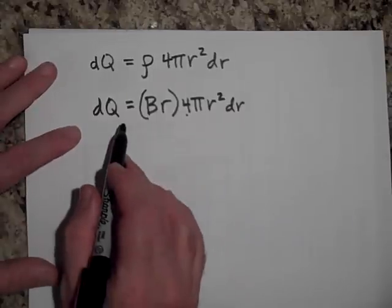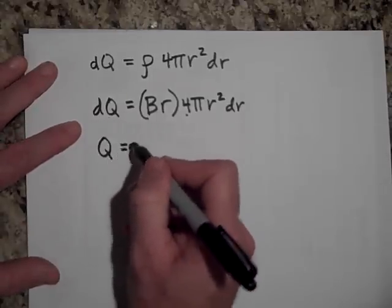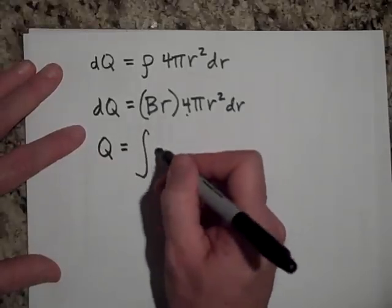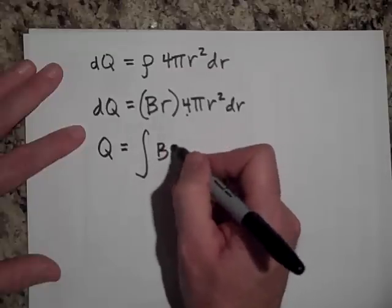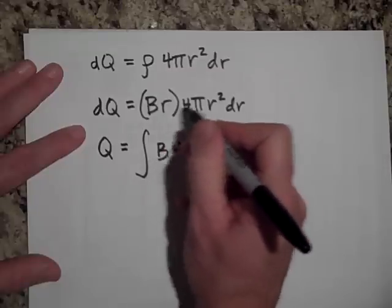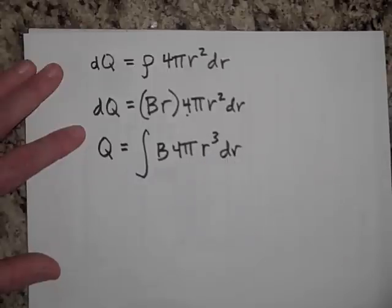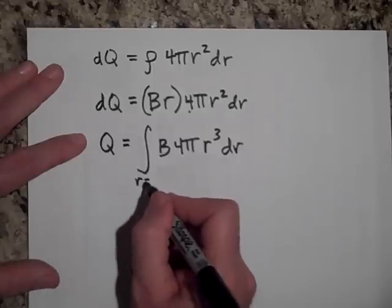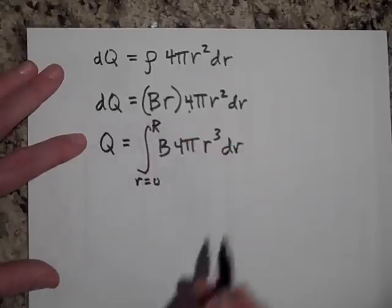All right, well, I don't want just the charge in that shell. I want the total charge. So the total charge will be summing up all these shells. And so that's going to be B times 4 pi, and I'll bring these R's together, R cubed DR. And I'm going to tell the integral to start adding these shells at R equals zero. And don't stop adding them until you get to R equals capital R.